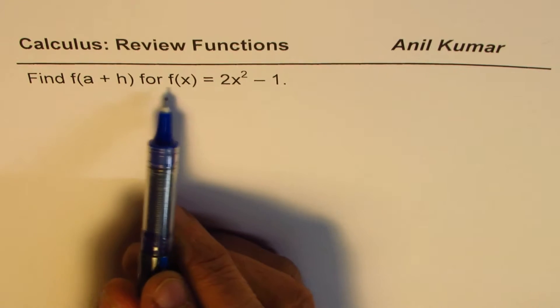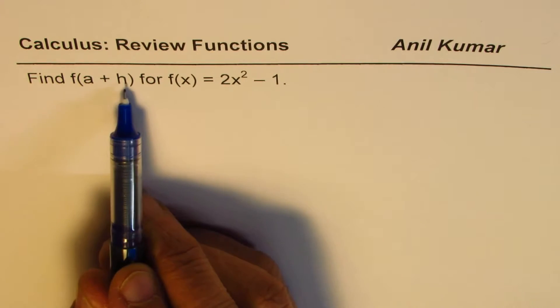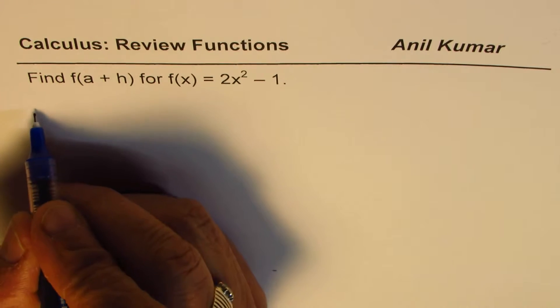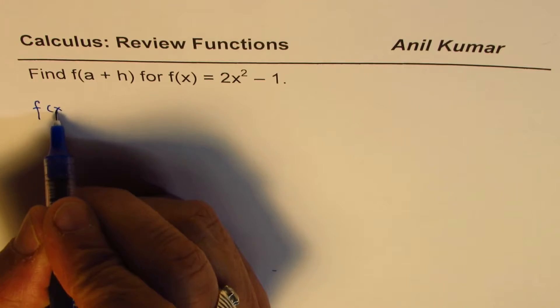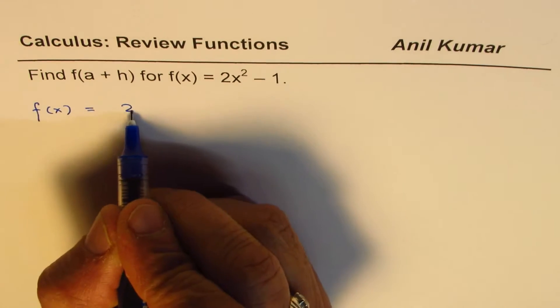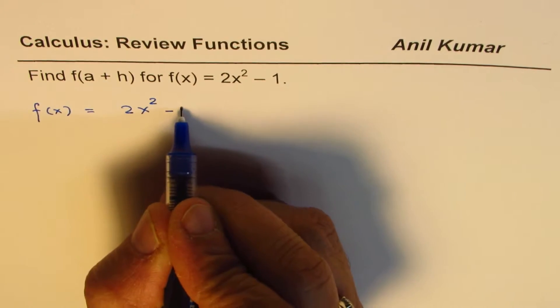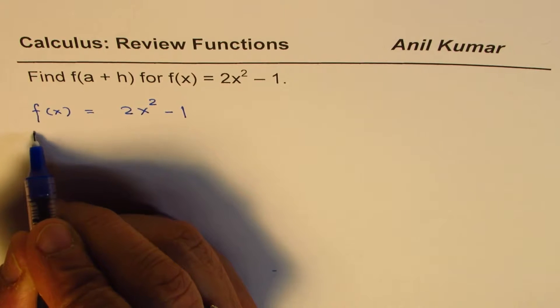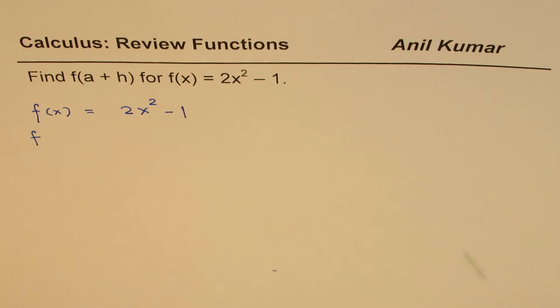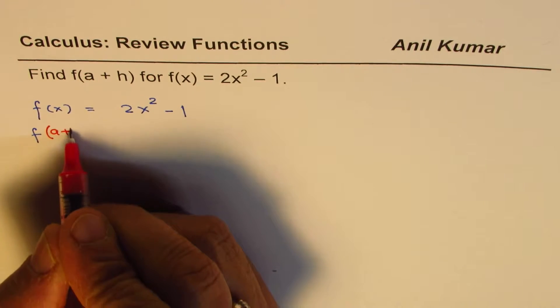f(a+h) really means that we'll replace x with a+h in the equation. So, we know that f(x) = 2x² - 1, and when we want to find f of, let us say, let me write it down, a+h.